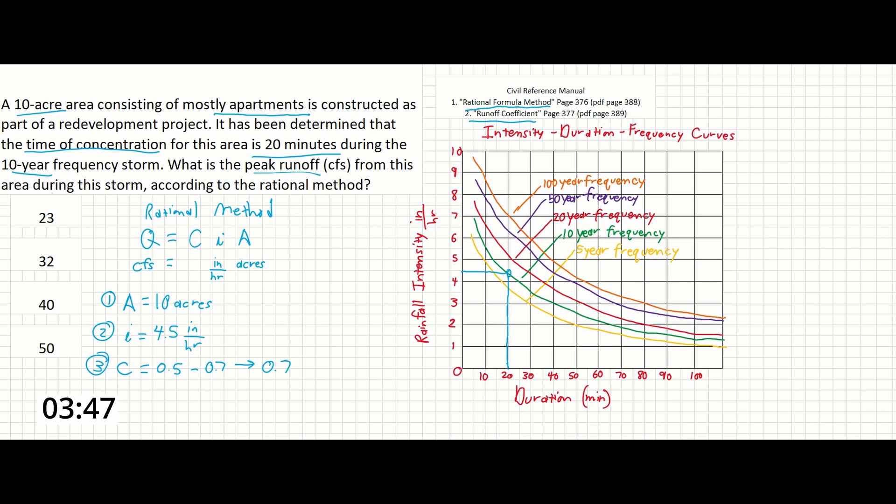And at this point, all we need to do is plug in those numbers. So Q equals 0.5 times—sorry, we just said it would be 0.7—0.7 times 4.5 inches per hour times 10 acres. And this comes out to 31.5 CFS, which on our problem we can see is going to be closest to 32.